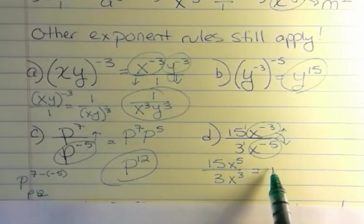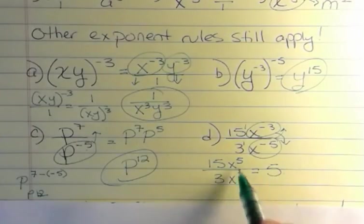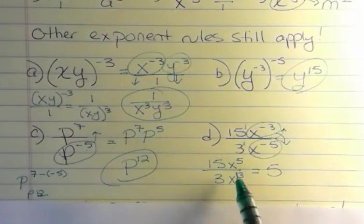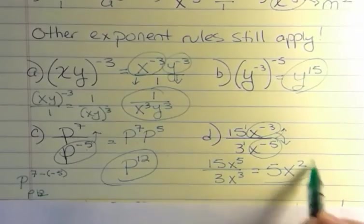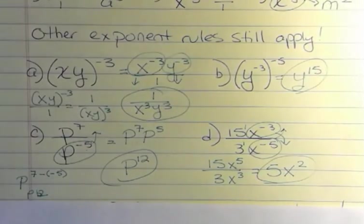So I have 15x to the fifth over 3x to the third. Remember, those two negative exponents swapped places because they move place in the fraction. 15 divided by 3 is 5 and I have more x's on top. If I use this rule where I subtract 5 minus 3 is 2, I have more x's on top by 2. And that's going to be my final answer.